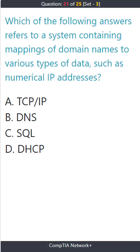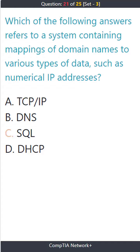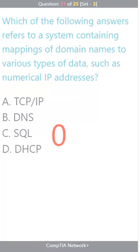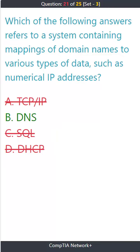Question 21. Which of the following answers refers to a system containing mappings of domain names to various types of data, such as numerical IP addresses? A. TCP/IP. B. DNS. C. SQL. D. DHCP. The correct answer is B. DNS.